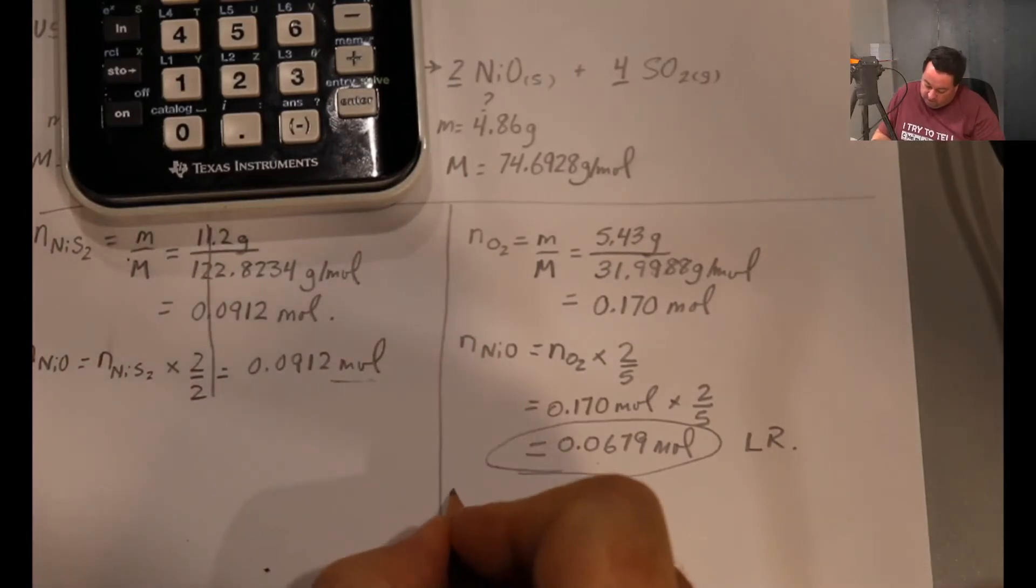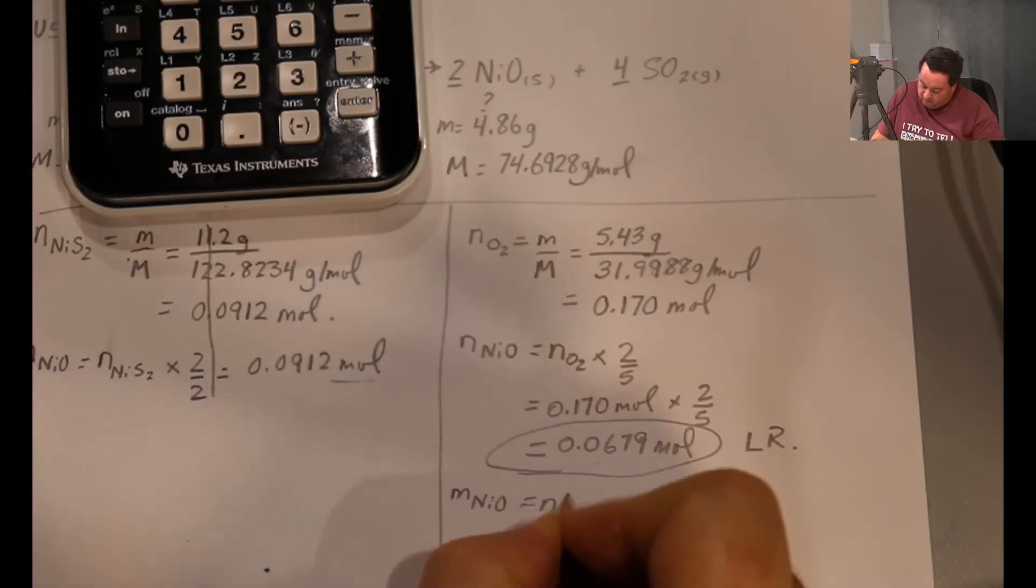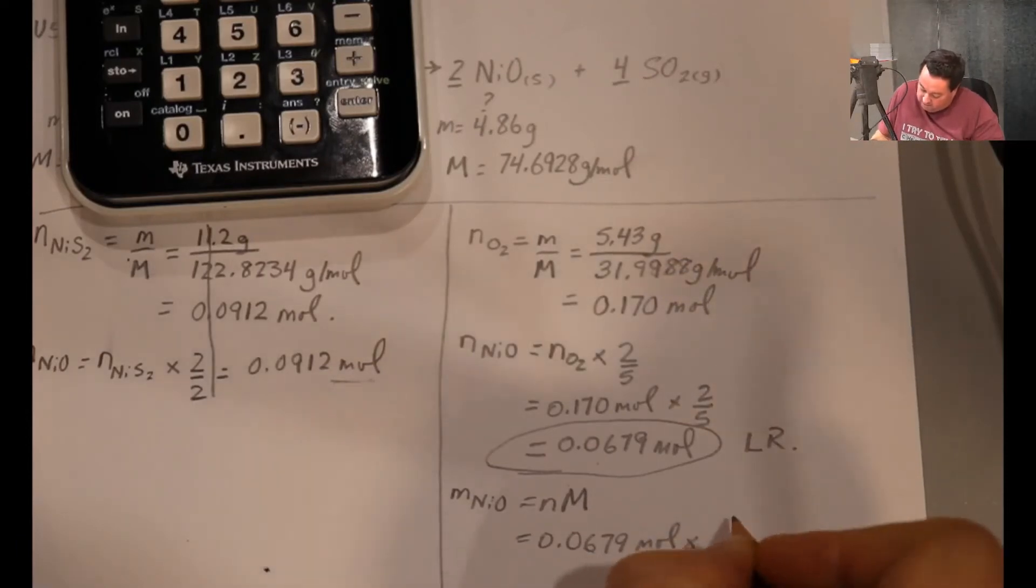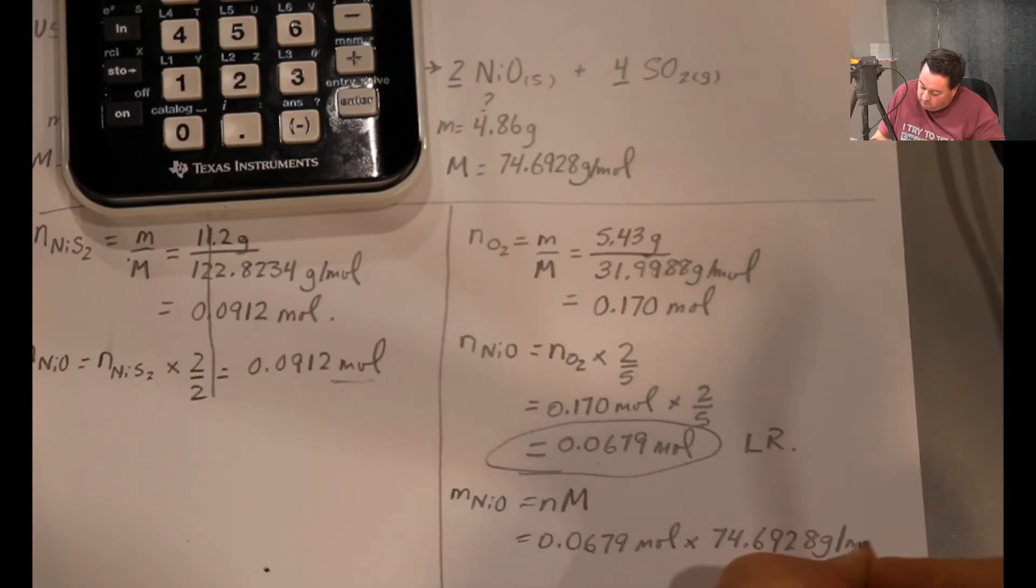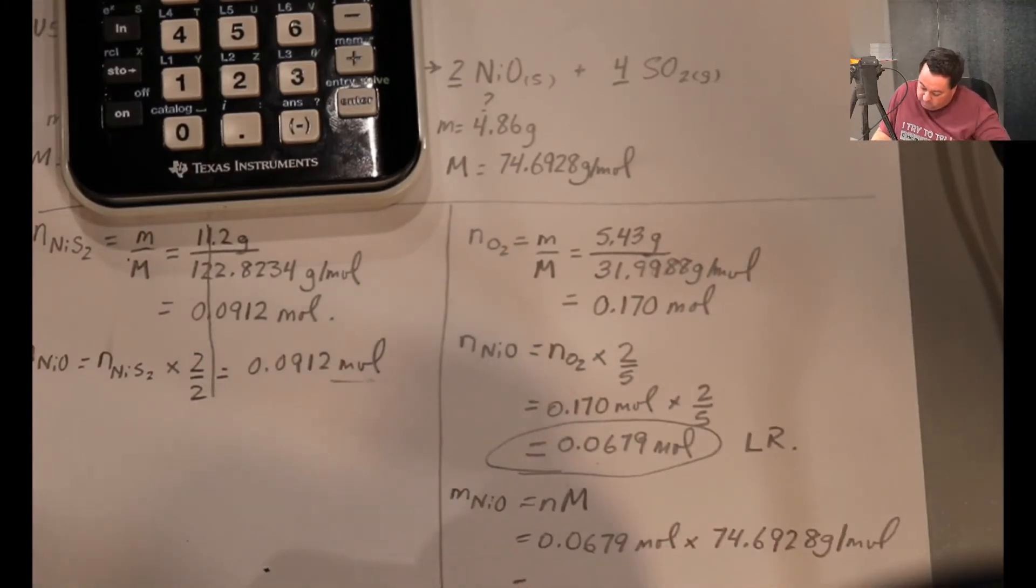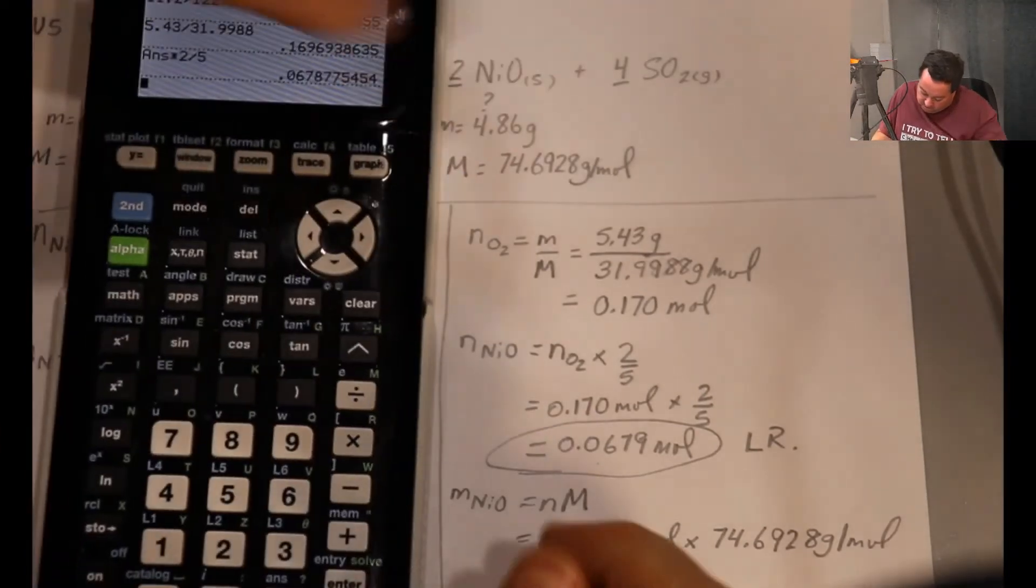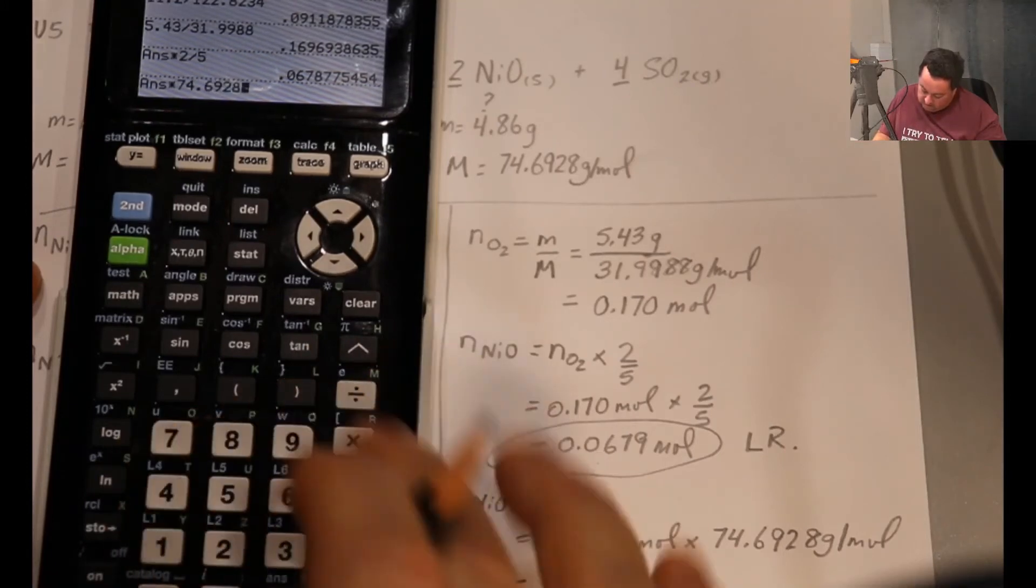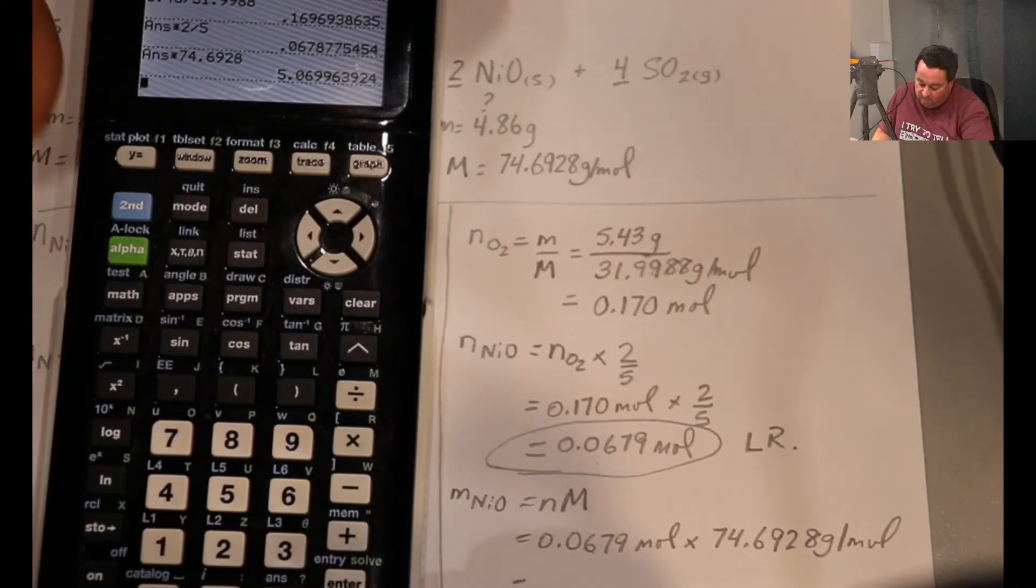I can work this through to completion now. The mass of NiO will be the number of moles times molar mass: 0.0679 moles times molar mass 74.6928 grams per mole. So I have that on my screen, times 74.6928, equals 5.07.